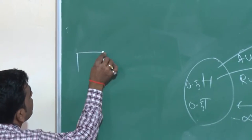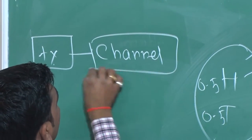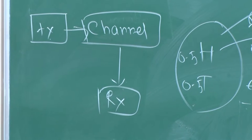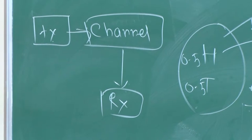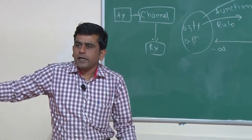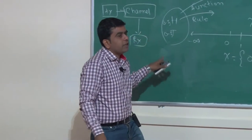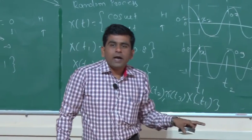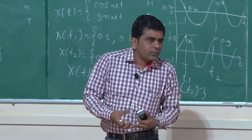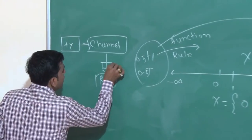Now, for a communication system we are having the transmitter, in between we are having a channel, and lastly we are having a receiver. At the transmitter point your message gets modulated, over the channel it is propagated, and after the transmitter it will be received at the receiver point. So we are having mainly three components: your transmitter, receiver, and channel. All of them will generate noise, but at the receiver side we are going to consider the noise.